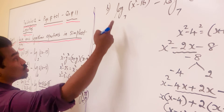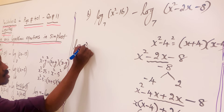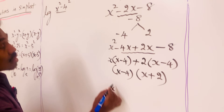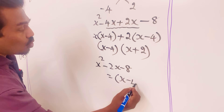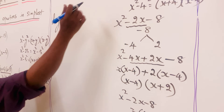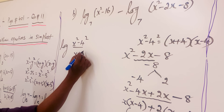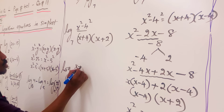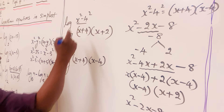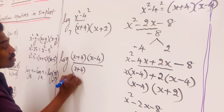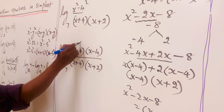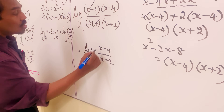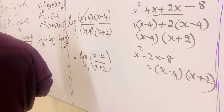So log of (x squared minus 16) over (x squared minus 2x minus 8). x squared minus 16 equals x squared minus 4 squared, which is x plus 4 times x minus 4. The denominator x squared minus 2x minus 8 equals x minus 4 times x plus 2. This gives log of (x plus 4)(x minus 4) over (x minus 4)(x plus 2), to the base. The (x minus 4) terms cancel, and finally we get log of (x plus 4) over (x plus 2), to the base. That is the final simplified form.